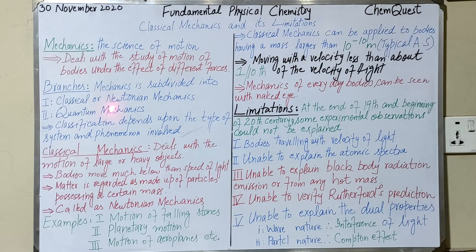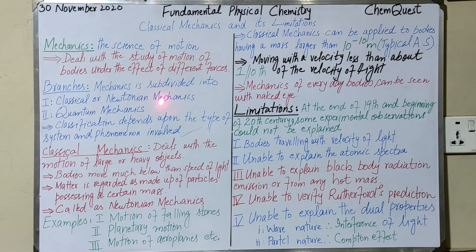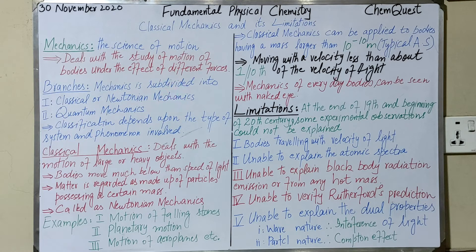Mechanics is divided into two branches: classical or Newtonian mechanics, and quantum mechanics. This classification is based upon the type of system and phenomena involved. We will shortly see what type of system classical or Newtonian mechanics applies to, and which phenomena quantum mechanics deals with.